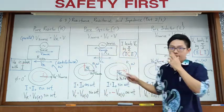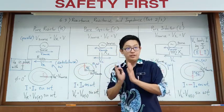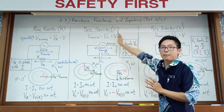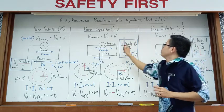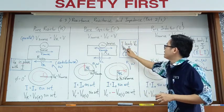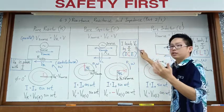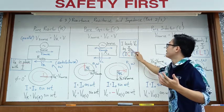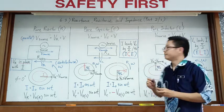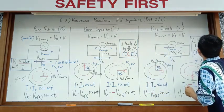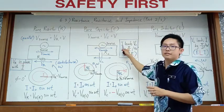Now for a capacitor, the voltage and current are not in phase. The current is in front — the current leads the voltage by π/2 radians, which is 90 degrees. Because rotation is anti-clockwise, who is in front? The current. The current is in front, leading the voltage.